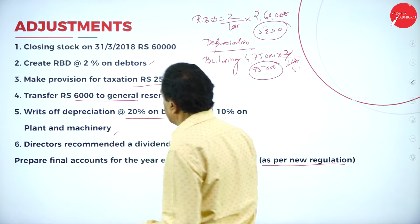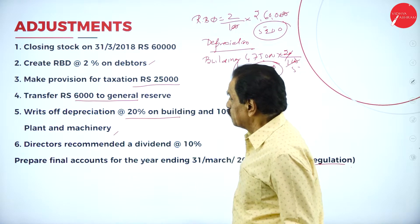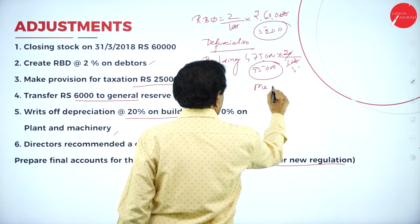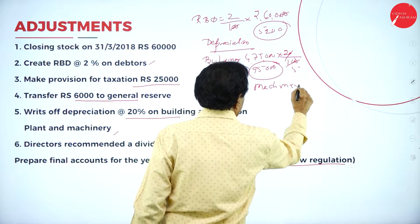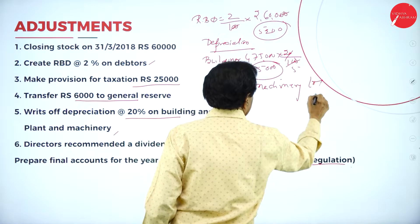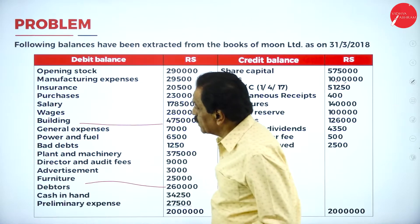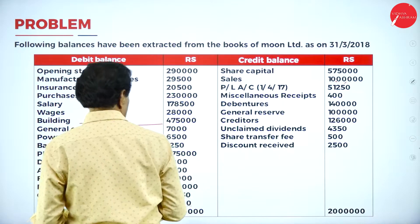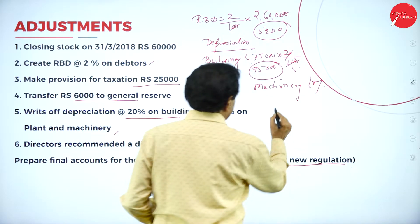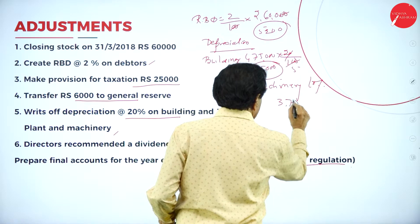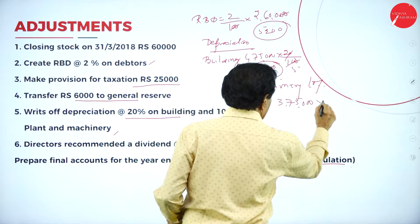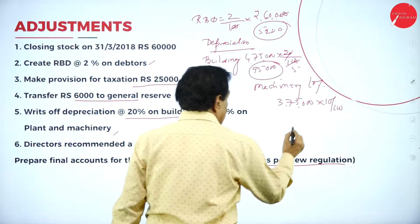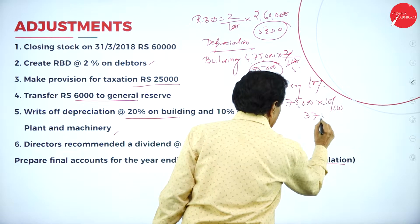Now machinery depreciation: 10 percent. Plant and machinery value is ₹3,75,000. So 10% of ₹3,75,000 equals ₹37,500.